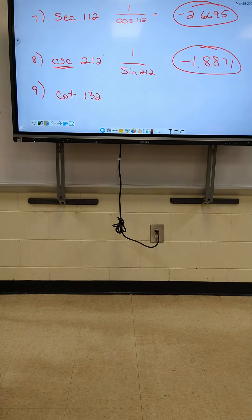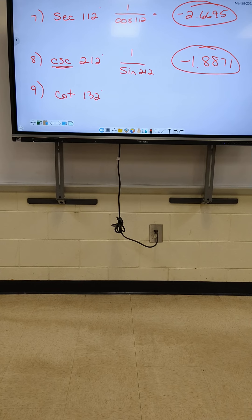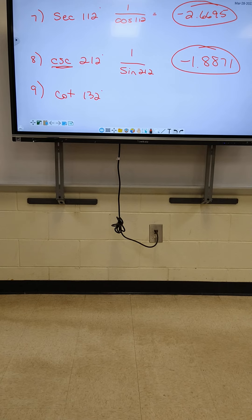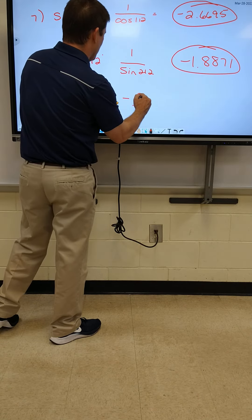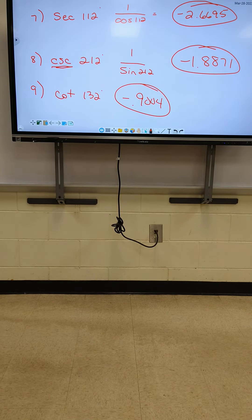Y'all should be able to do number 9 with no problem. For cotangent, you use 1 over tangent. Mark, what's your answer for number 9? Negative 0.9004. Does anybody have a question on 7, 8, or 9?